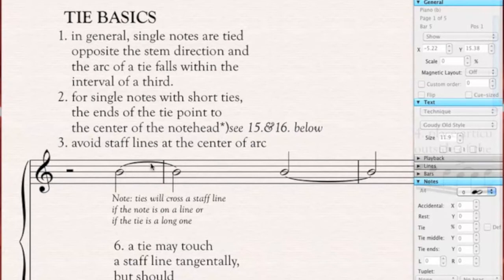Avoid staff lines at the center of the arc, such as this. Now ties will cross a staff line if the note is on a line, or if the tie is a long one. So here you see the tie crosses a line, so that's okay.